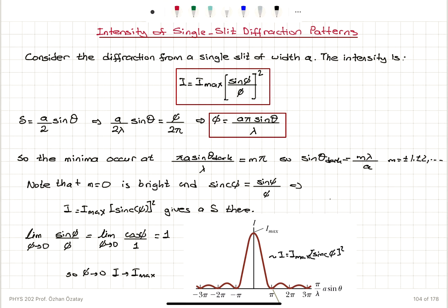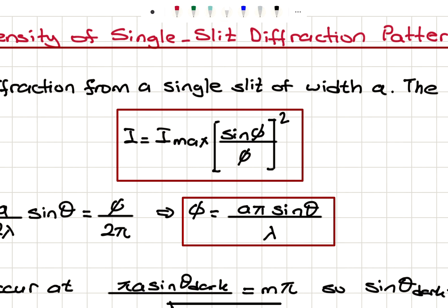It can be shown that this intensity is the maximum intensity multiplied by the square of sine φ over φ. So this is the distribution of intensity on the screen.